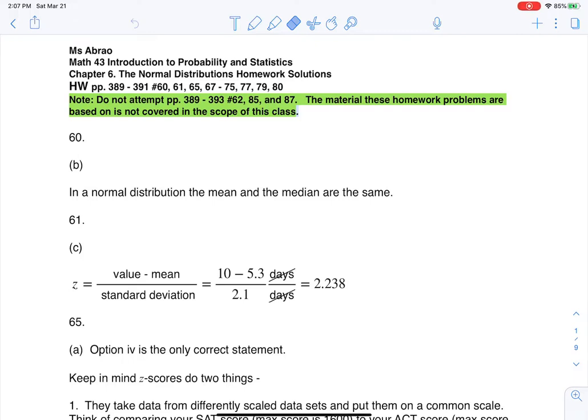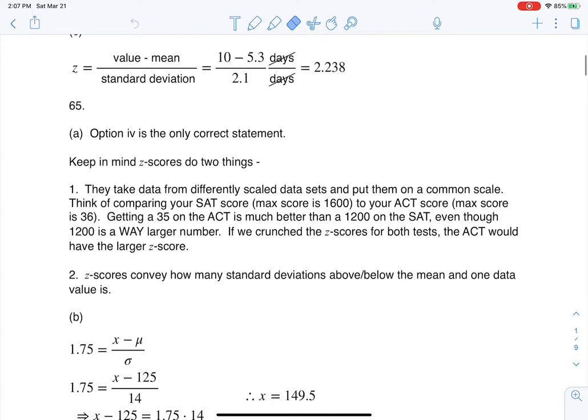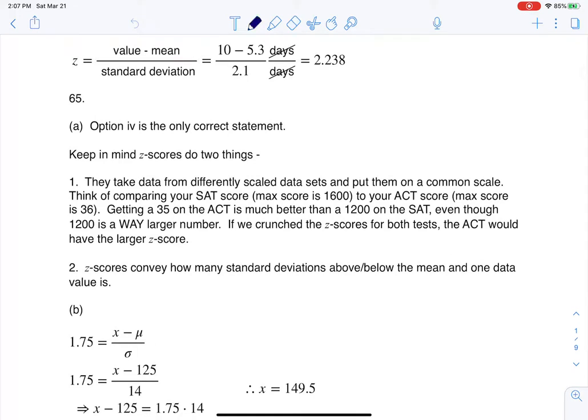Hey Math 43, I had a question coming out of the Chapter 6 homework number 65. And here we were asked, initially we were given Kyle's Z-score for his blood pressure. So we were told for 65 that Kyle's Z-score was 1.75.